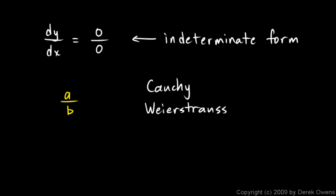Cauchy in the early 1800s, Cauchy incidentally was a homeschool student, and then Weierstrass in the mid-1800s, they developed the theory of limits.